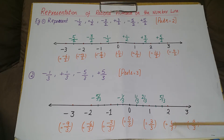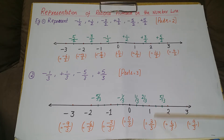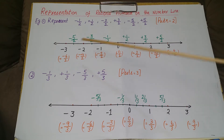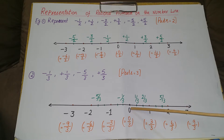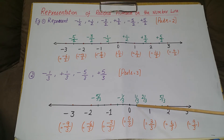We write 0 as 0/3 since the denominator is 3, then 1 as 3/3, 2 as 6/3, and 3 as 9/3 — because 1 times 3 is 3, 2 times 3 is 6, and 3 times 3 is 9. Write the same numbers on the left side as negatives. For 1/3: the numerator 1 comes between 0 and 3, so it is the first part — 1/3 is here.